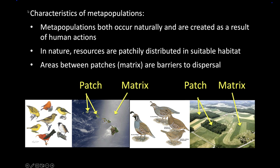A classic example would be the Hawaiian Islands. If we were some songbirds living on trees, Oahu has trees, Maui has trees, the Big Island has trees, but they're separated by water. A bird can fly across — it's a little hard, not close by — but theoretically can move through the matrix and get to a patch. That's an example of a naturally occurring patch and matrix.